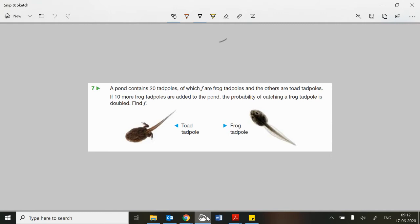I'm already thinking F over 20 is the probability of picking out at random a frog tadpole and a toad tadpole would be T over 20, but you need an expression for T in terms of F. So the rest are essentially 20 take away those F are your T. That's the expression for the toad tadpoles.